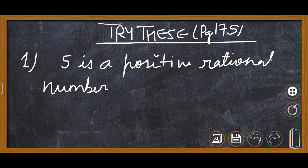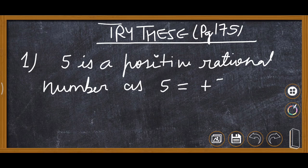5 is a positive rational number as 5 is equal to plus 5 upon 1. Means in this way we can also write it, 5. So this is positive rational number because it includes all the positive signs.